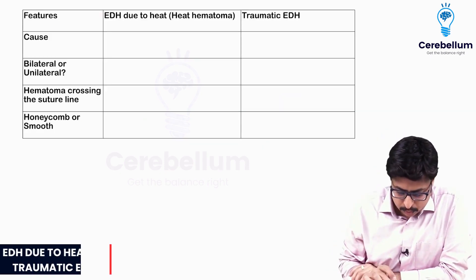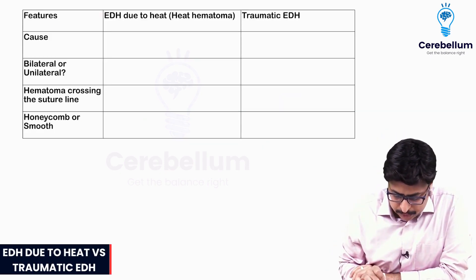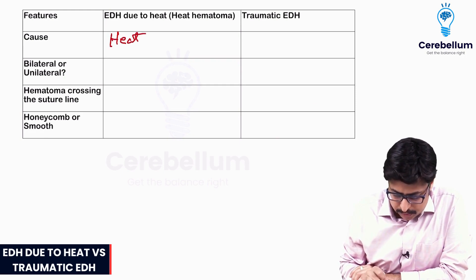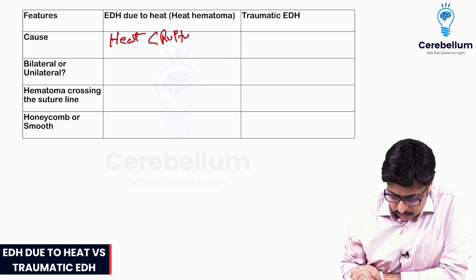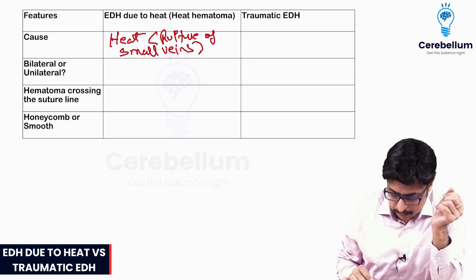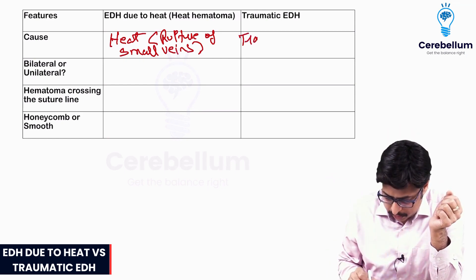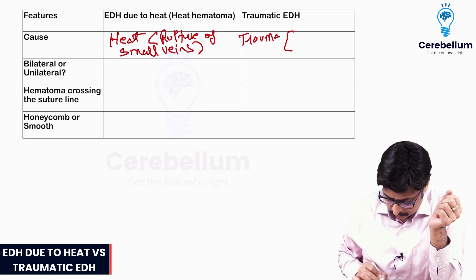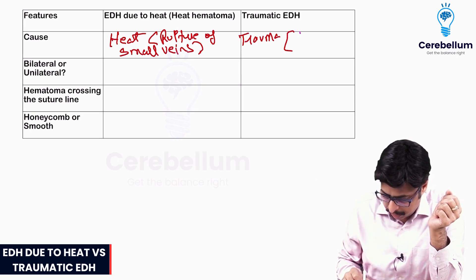Now let us see the differences. In EDH due to heat, the hematoma occurs due to heat causing rupture of small veins, because the heat expands the blood. In traumatic hematoma, EDH is due to trauma and there is rupture of the middle meningeal artery.